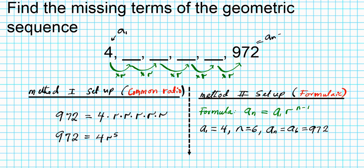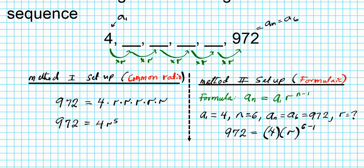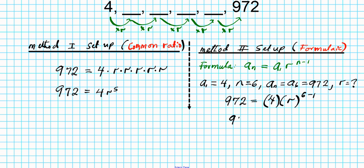The common ratio is what we need to find. Plugging all the information into the formula: 972 equals 4 times R raised to 6 minus 1. Simplifying, we get 972 equals 4 times R to the fifth power — which is exactly the same equation as method one. So whichever method you prefer to set up the equation to solve for R, go ahead and use it.